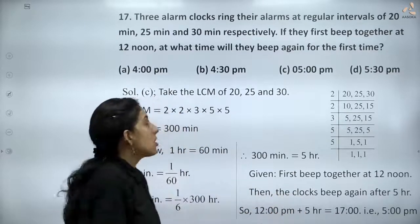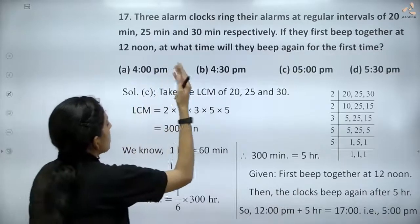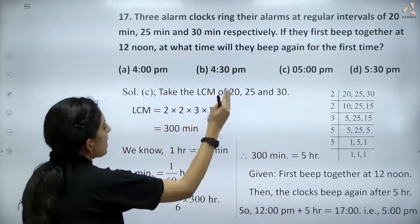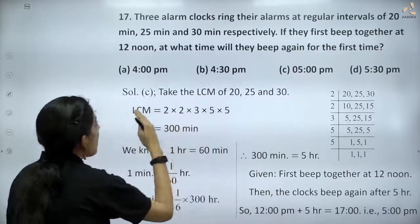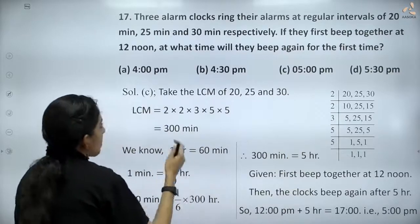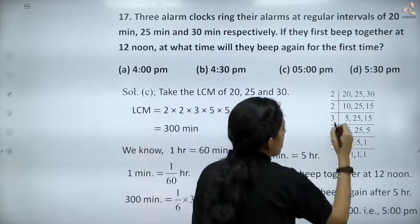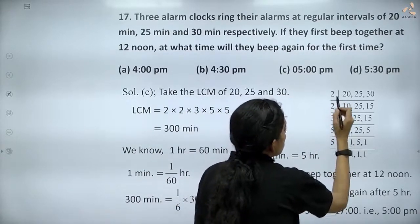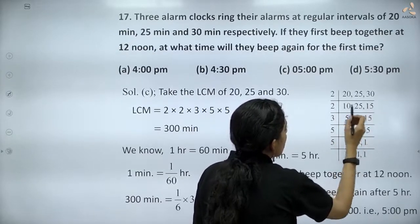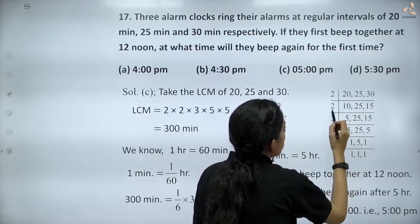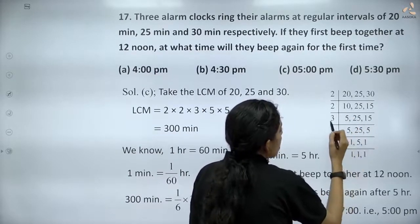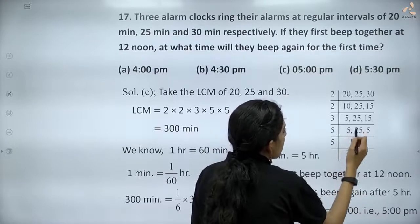For calculating when they will beep together again, we have to find the LCM of 20, 25, and 30. By dividing by 2, you get 10, 25, and 15. Dividing by 2 again, you get 5, 25, and 15. Dividing by 3, you get 5, 25, and 5.